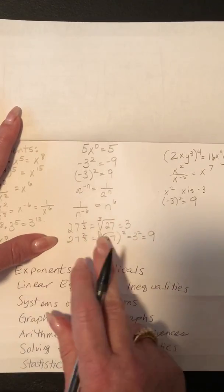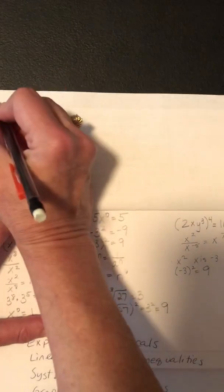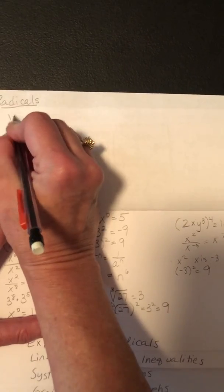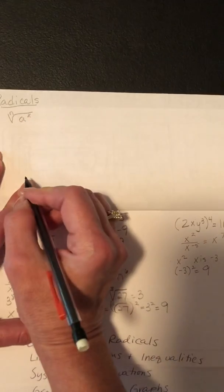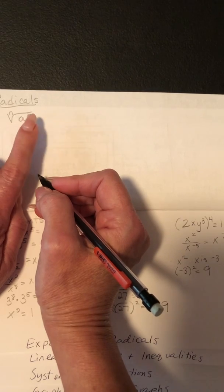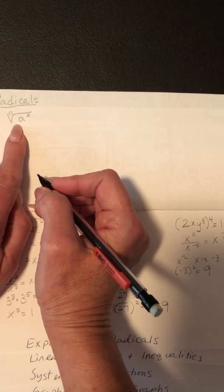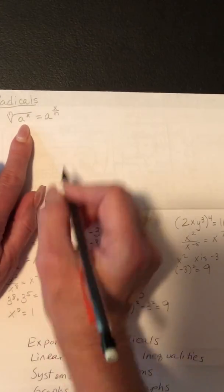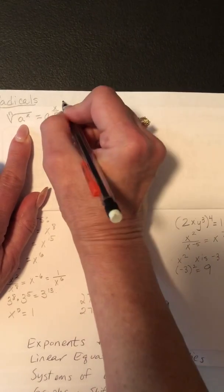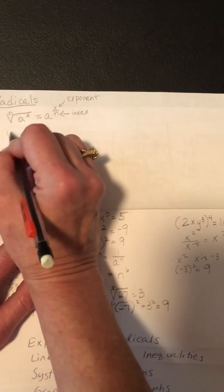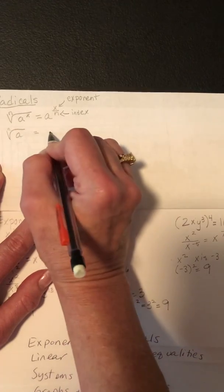Now let's talk about radicals. We touched on them a bit above, but let's go through more. If you have the nth root of a to the x, the index is n and the exponent is x. Written in exponential form, that's a to the x over n. If you just have the nth root of a, that's a to the 1 over n.